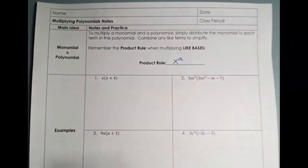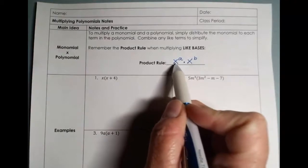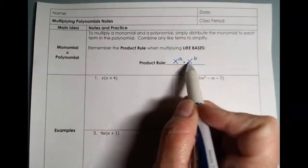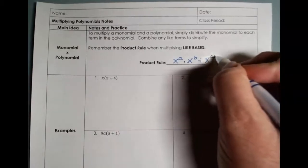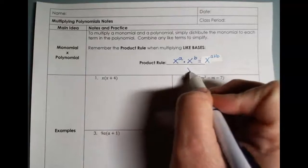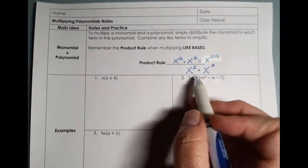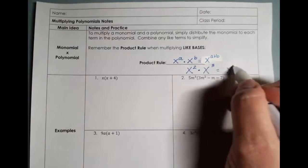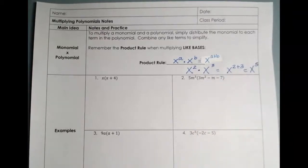So if we had x to the a times x to the b — the base is the letter attached to the exponent, so x is the base. They're exactly the same, so we have our like bases, the base stays x, and our exponents add together. So if I had x squared times x to the third, the base remains x and we add the exponents: x to the fifth. When we were adding and subtracting polynomials, we did not change the exponents. But when you multiply, you do have to use this product rule.